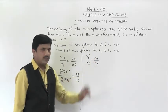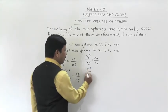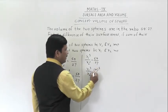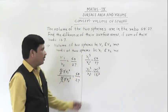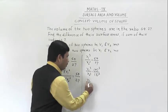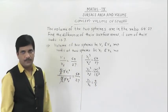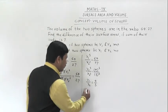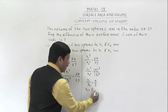64 and 27 are perfect cubes. We can write R1³ upon R2³ equals 4³ upon 3³, since 27 is the cube of 3. Cancelling the cubes on both sides gives R1 upon R2 is equal to 4 upon 3. So R1 is equal to (4/3) × R2.